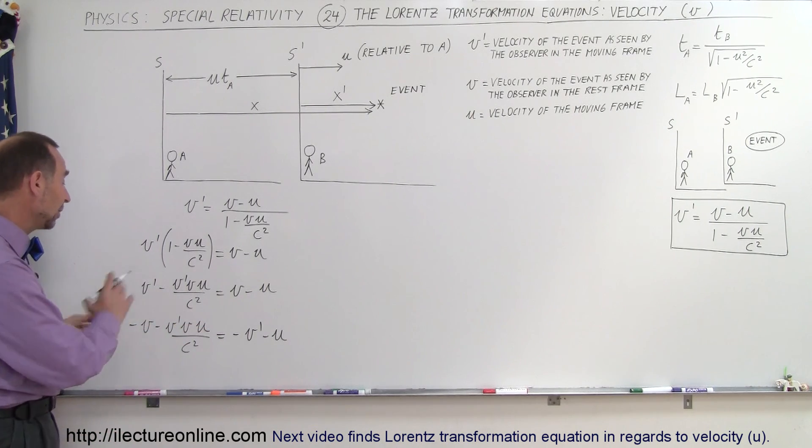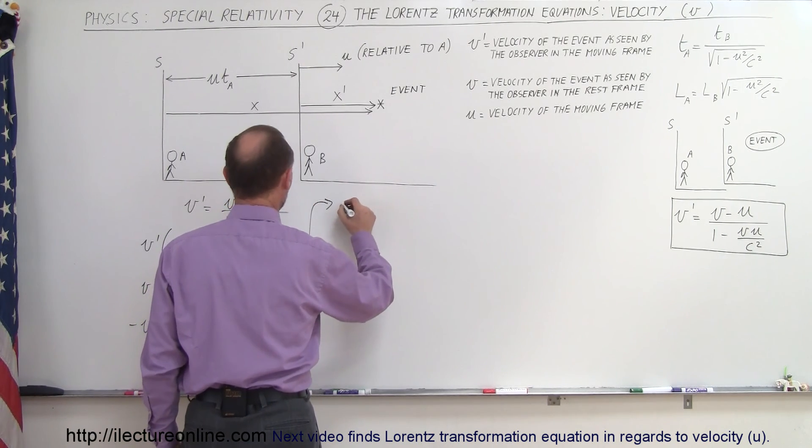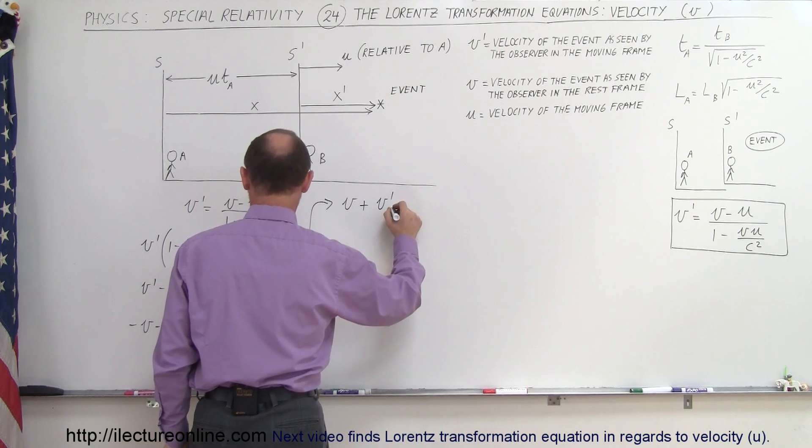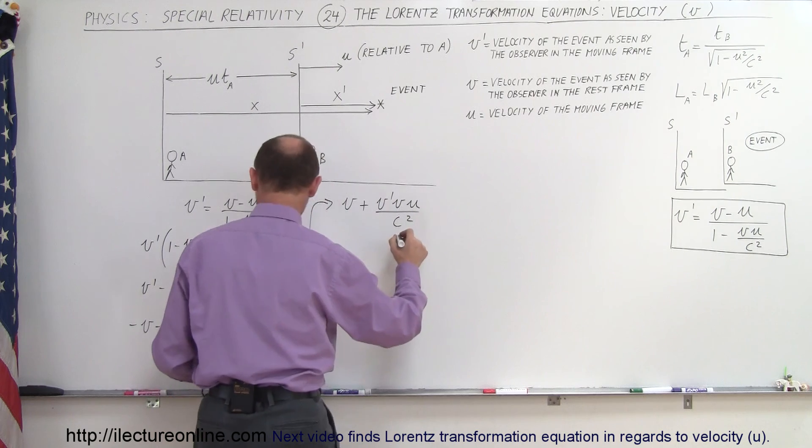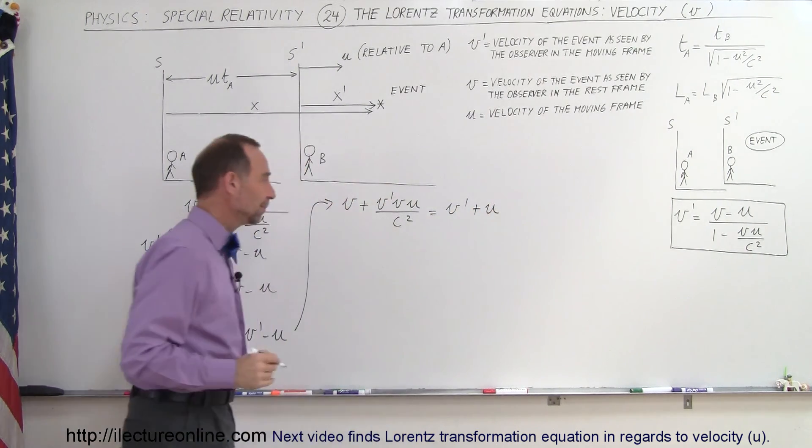Since we have negatives everywhere, we're just simply going to multiply both sides of the equation by negative 1 to make it all into positives. So moving up here we end up with V plus V' V times U over C squared is equal to V' plus U.